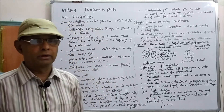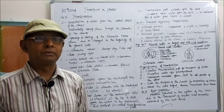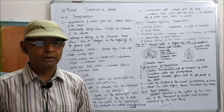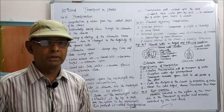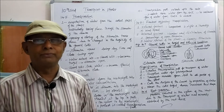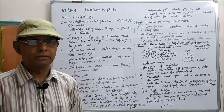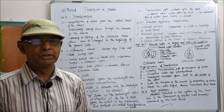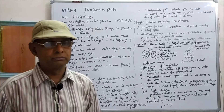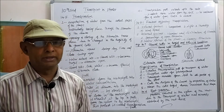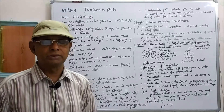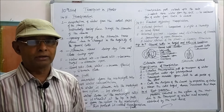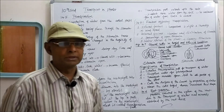When water evaporates from the mesophyll tissue of the leaf through the open stomata, this lowers water concentration in the mesophyll cells. As a result, more water is drawn into the mesophyll cells from the xylem present in the veins through the process called osmosis. By means of osmosis, water enters into the mesophyll cells through the xylem.